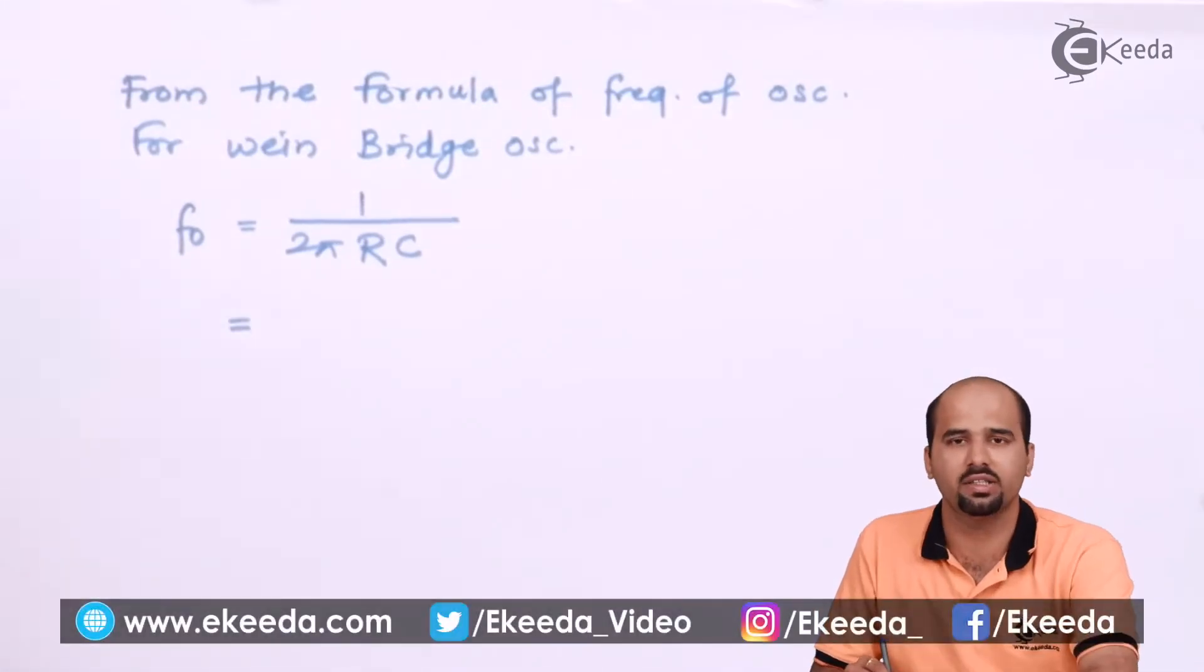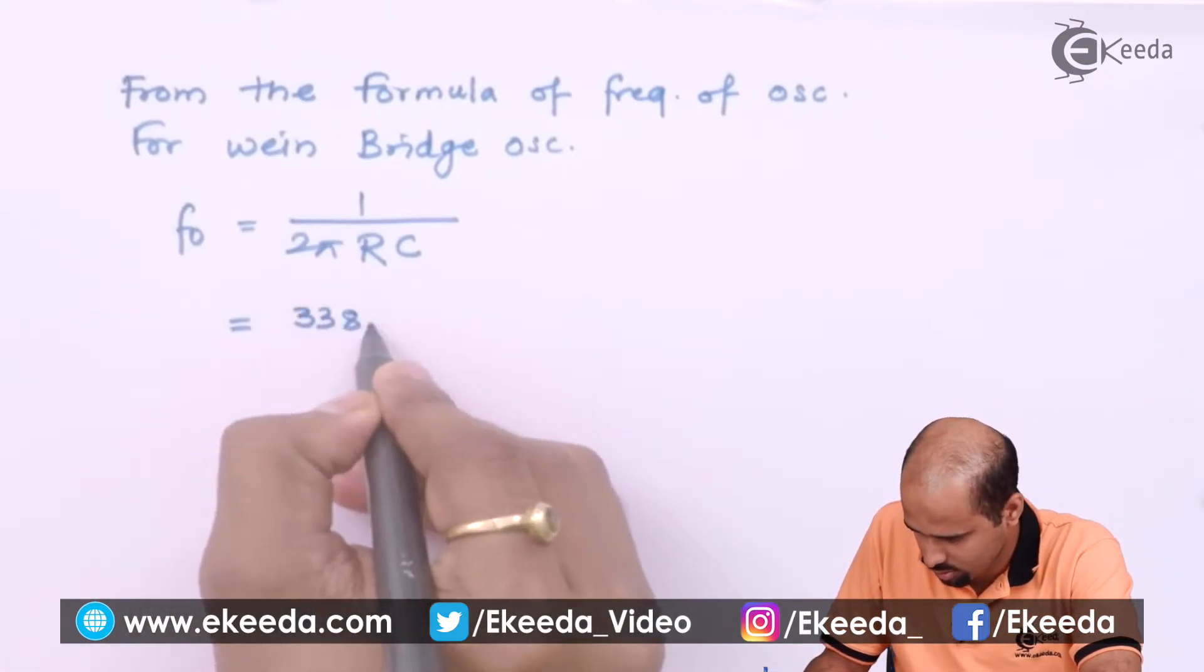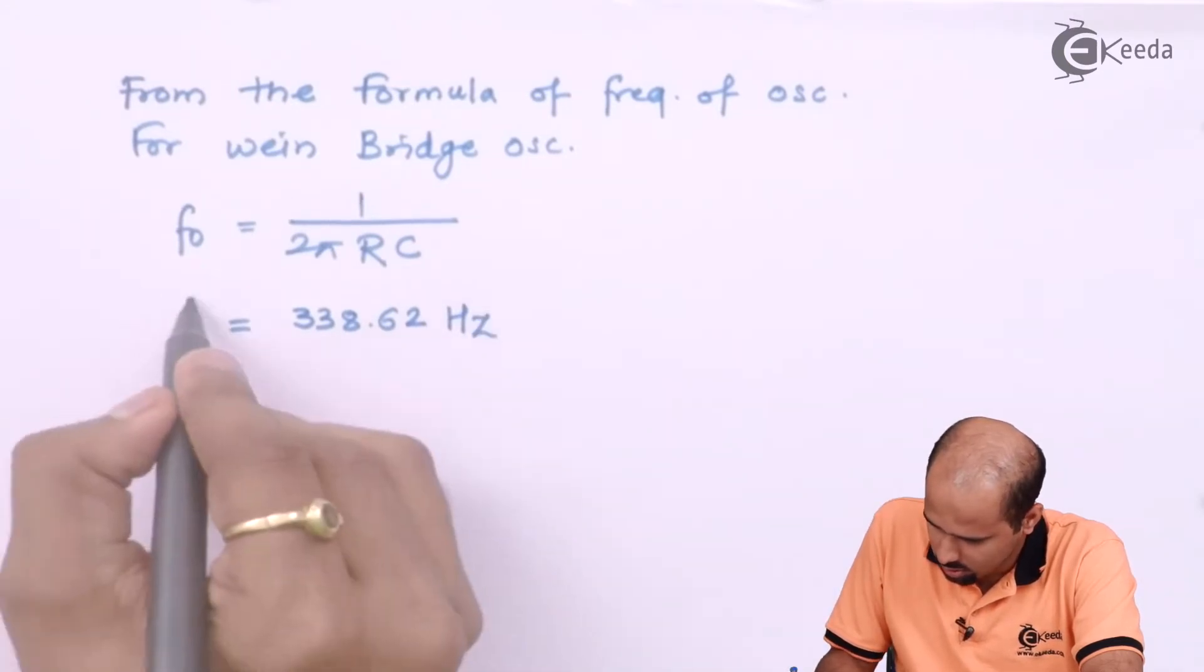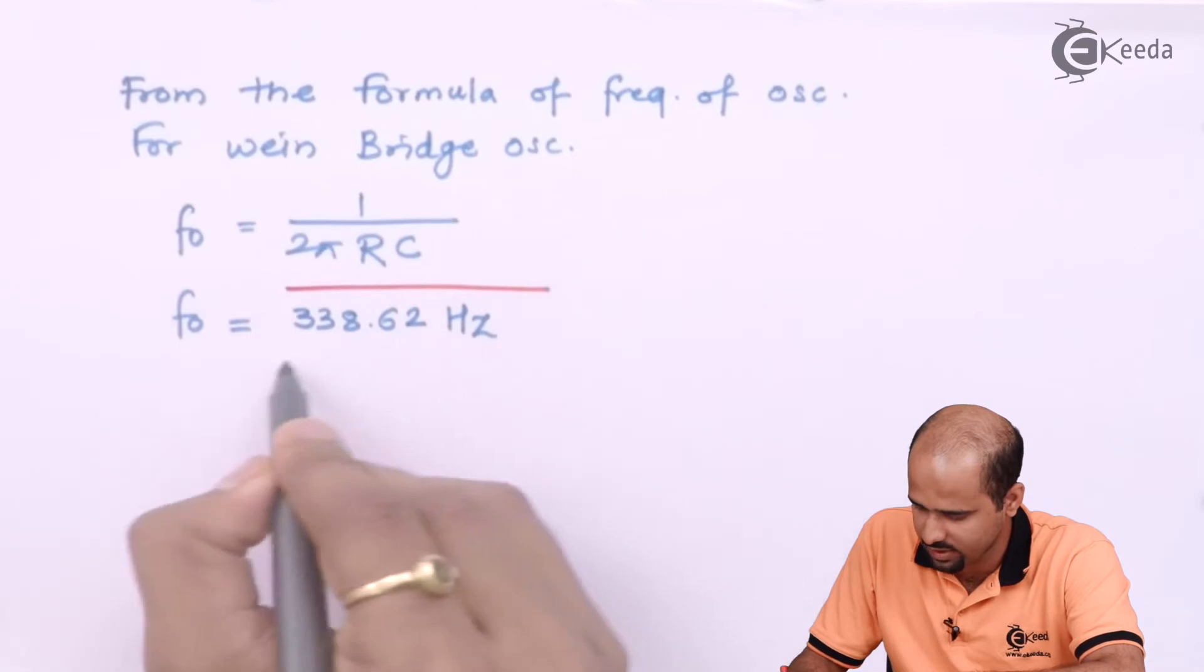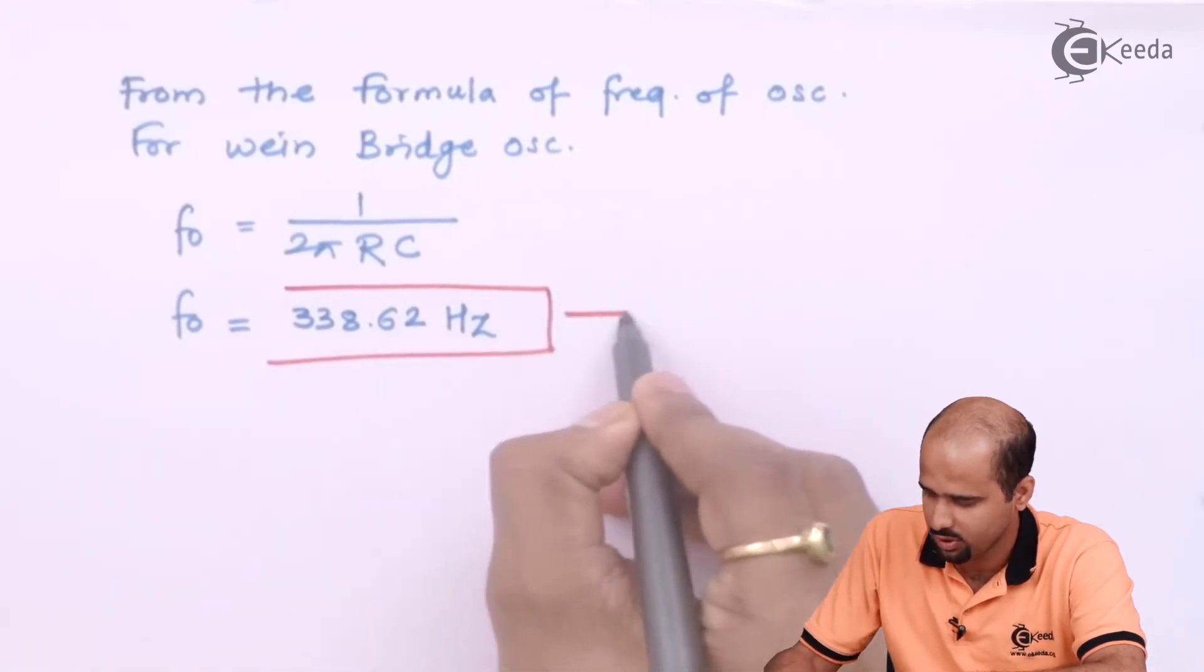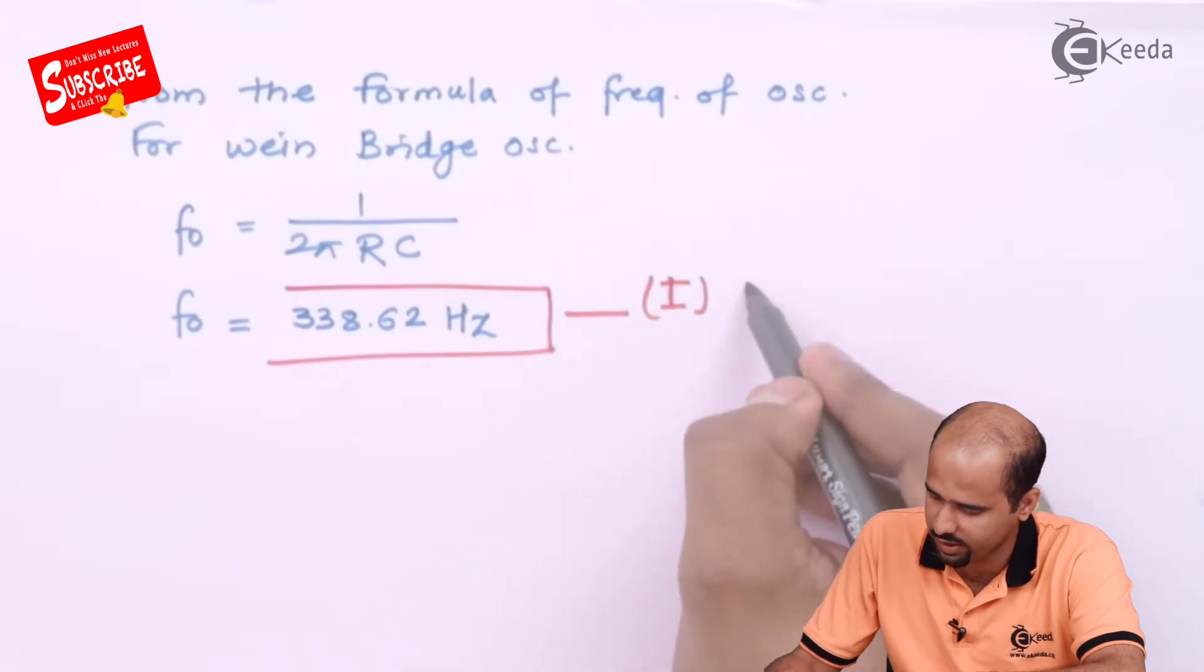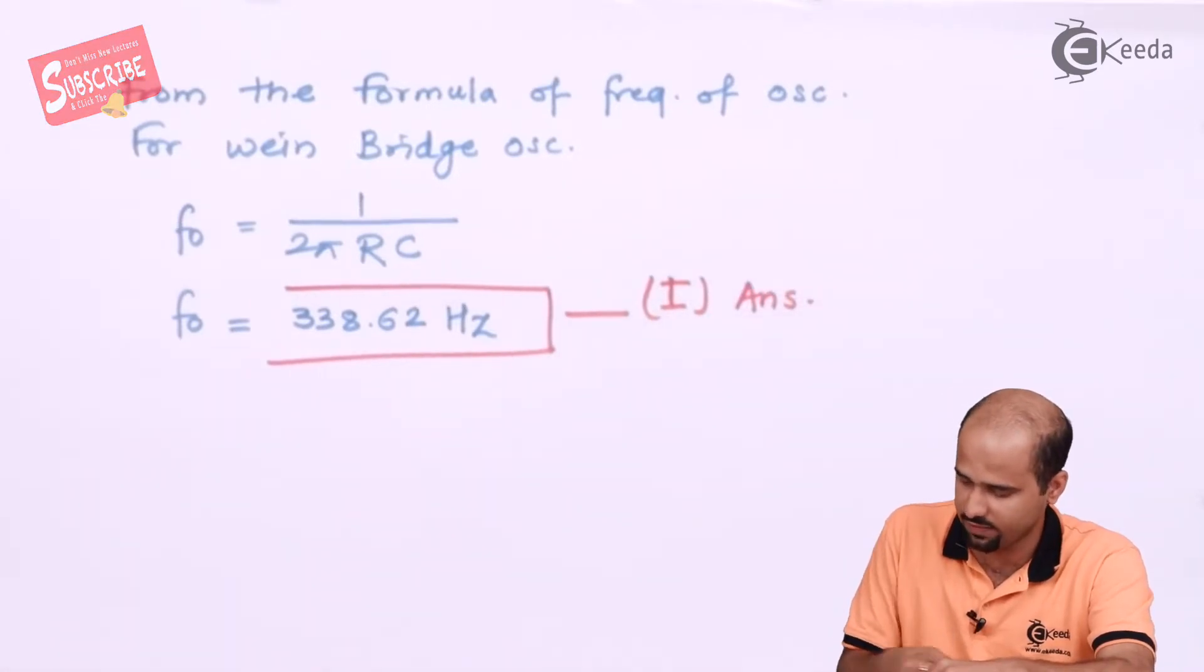Here we are getting 338.62 hertz. So this is nothing but the first finding that we have got as frequency of oscillation. So we will say that this is first finding of answer. Let's move towards the second finding of answer.